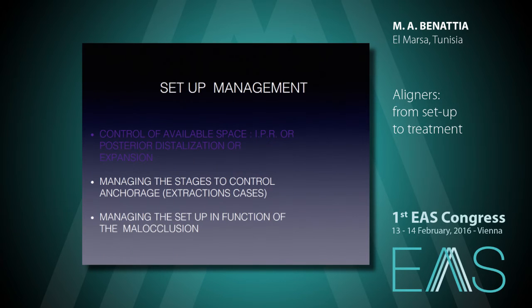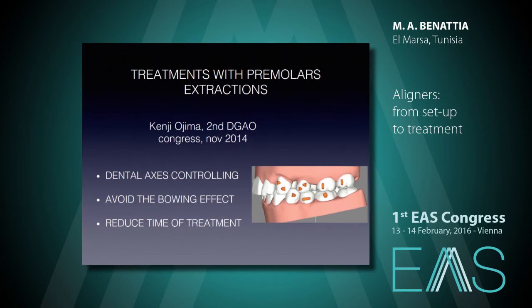After that, we have to manage the stages to control and encourage. Treatment with premolar extractions: at the last congress of DGAO in November 2014, Kenji Ojima showed us the way to treat with extractions by controlling dental axes using two ellipsoid attachments. Above each attachment, a force is applied and a moment is generated. Those two movements are opposite and cancel each other, so we can have a bodily movement without tipping. He also suggested to avoid the bowing effect by moving teeth using stages. Treatment with extractions requires a high number of aligners, so he suggested to reduce time of treatment by using a device to accelerate the treatment.